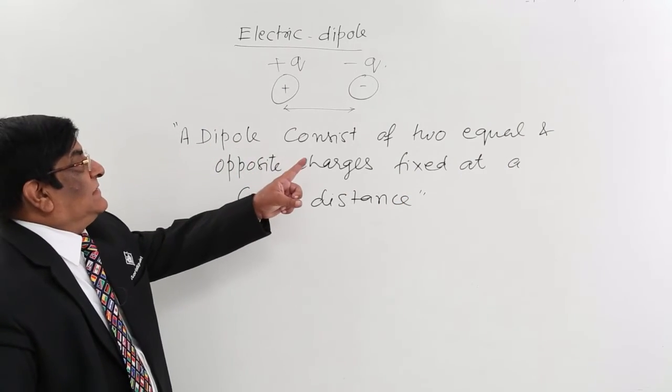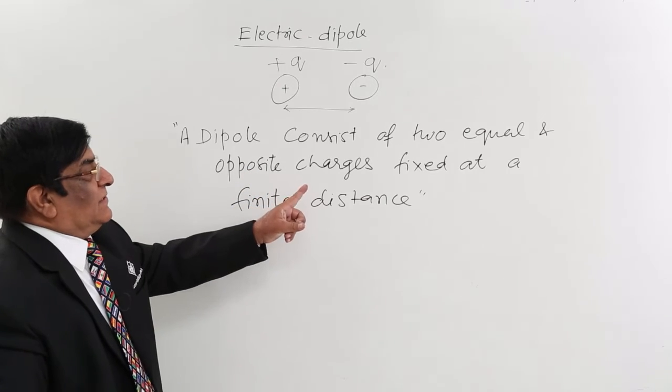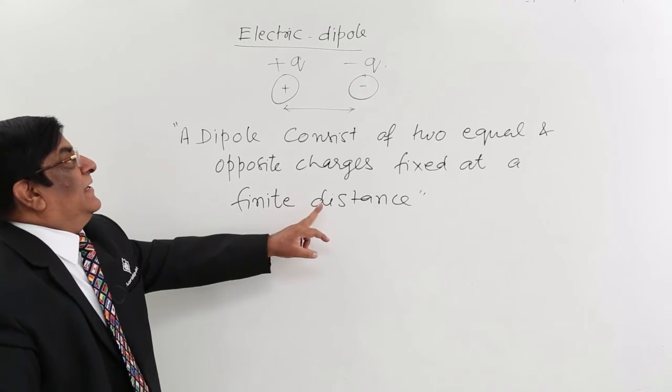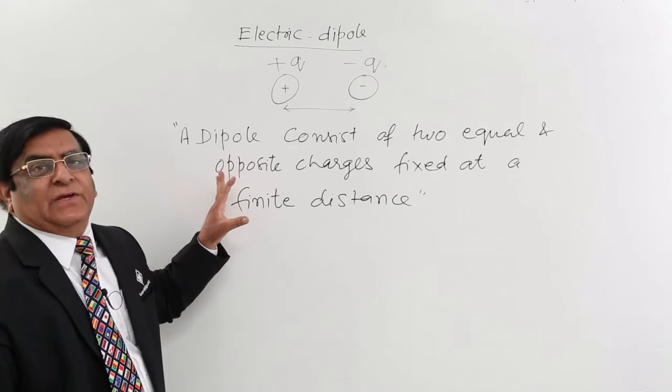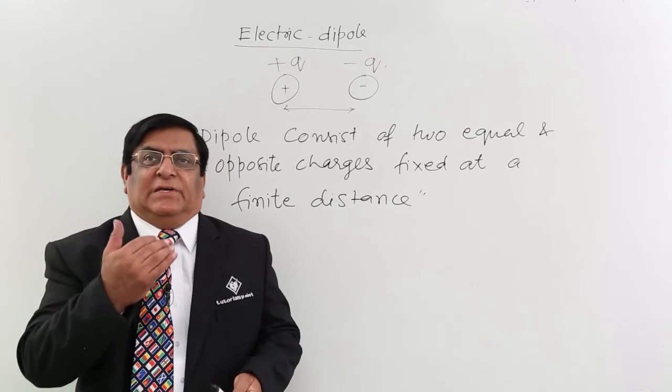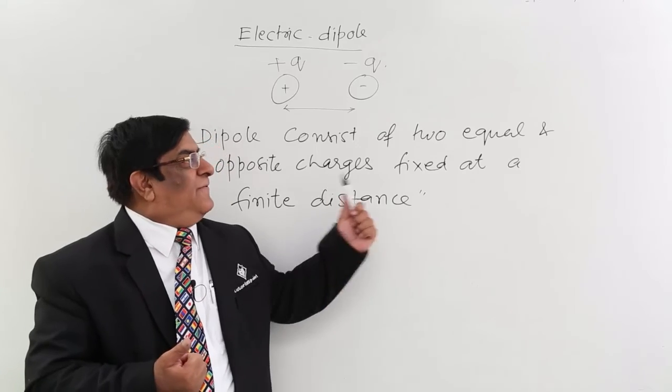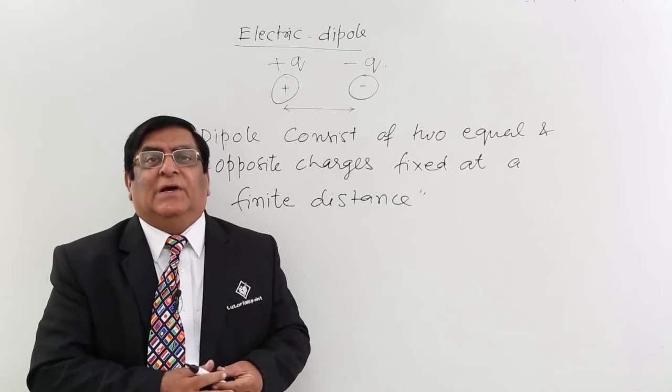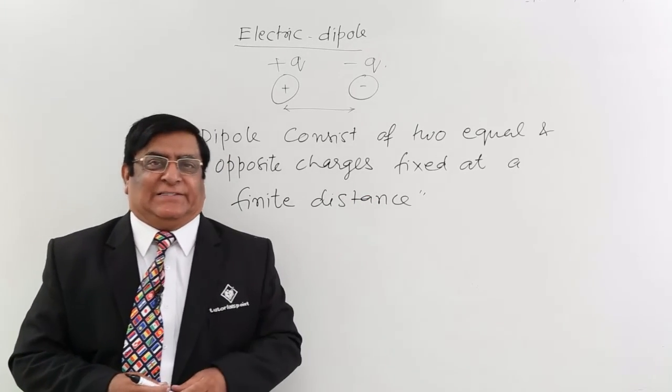So a dipole consists of two equal and opposite charges fixed at a finite distance. That makes a dipole—so this is the definition. And now we will see how effective it is, how powerful it is, how do we measure that—that we will see in the next lecture.